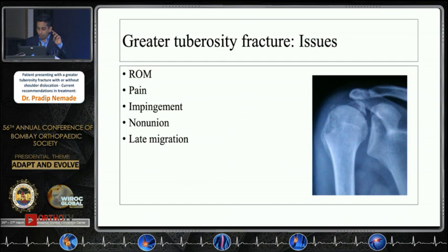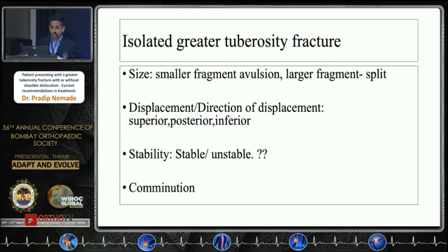After the glenoid, we come to the humeral side. Greater tuberosity fractures present different issues such as loss of range of motion, pain, impingement, and sometimes non-union and late migrations. The factors which affect management include the size — whether it is a small fragment, which tends to be an avulsion, or a larger split fragment — and what the displacement is: undisplaced or displaced, and in which direction: superior, posterior, inferior, stable, or unstable.